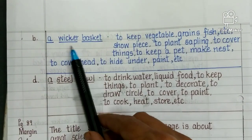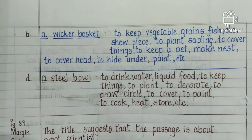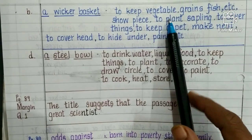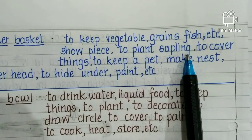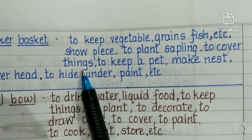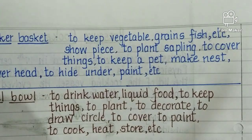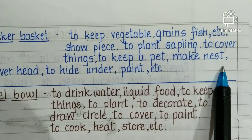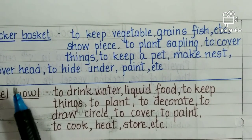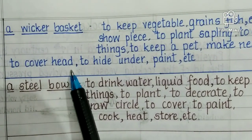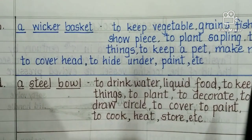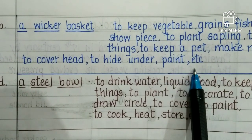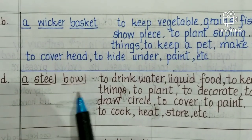A wicker basket can be used: to keep vegetables, grains, fish, etc., as a showpiece, to plant saplings, to cover things, to keep a pet, to make a nest, to cover the head, to hide under, or to paint on.